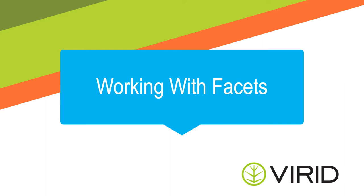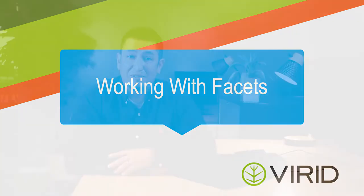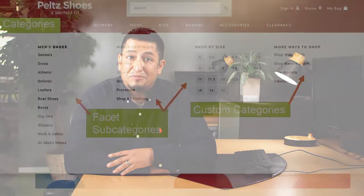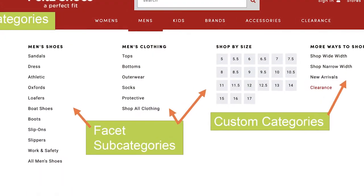You've been using facets, but might not have known what they're called. Using facets will allow you to filter out your products to get the most relevant results. When browsing for a pair of shoes, you can use your facets to filter out size, price, and color to find that pair of shoes to wear back to the office.